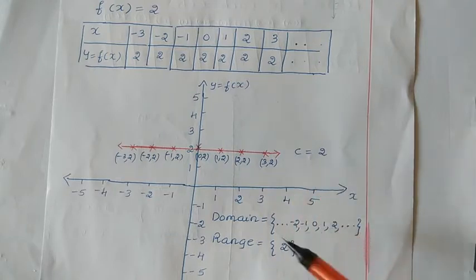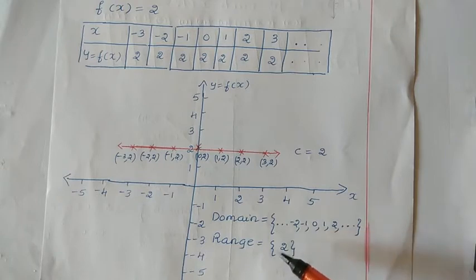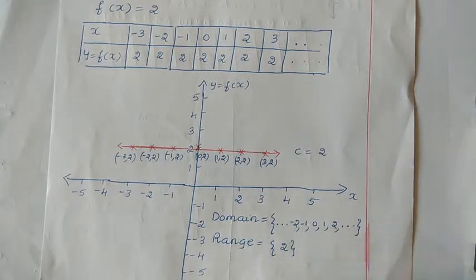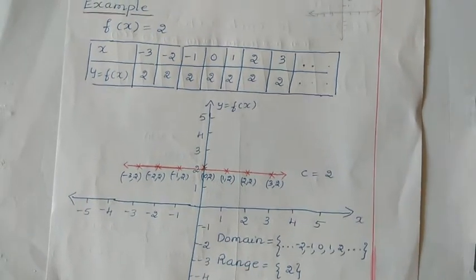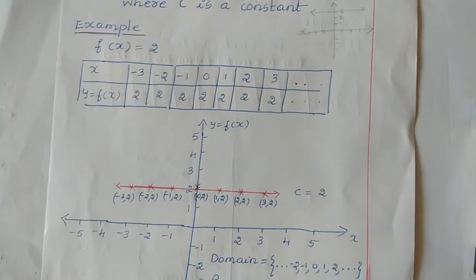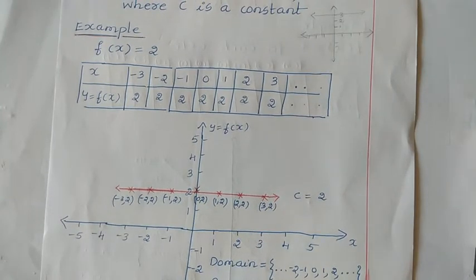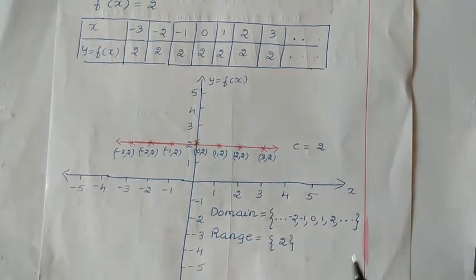For this function, the domain is the real number, so we can have a large collection of real number values, but the range is only one value, which is a constant. The constant depends on the problem — that is the range value. In this example, f of x is equal to 2, meaning the range is the constant value 2.